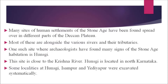Many sites of human settlements from the stone age have been found spread over different parts of the Deccan Plateau, most alongside various rivers and their tributaries. One such site where archaeologists have found many signs of stone age habitation is Hunsgi, located in North Karnataka, close to the Krishna river. Some localities at Hunsgi — Isampur and Ediapur — were excavated systematically.